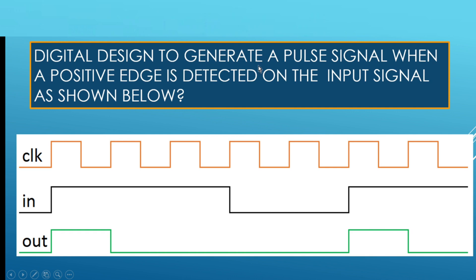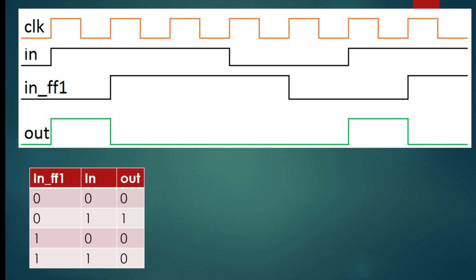Design a logic circuit to generate a pulse signal whenever a positive edge is detected on the input signal. This is the input signal - whenever there is a positive edge detected, your logic should generate a pulse. This is the second positive edge on the input signal, and this is the pulse generated on the output signal. Your time starts now.